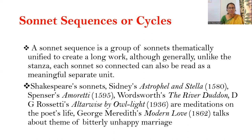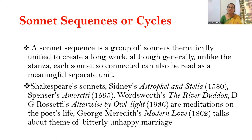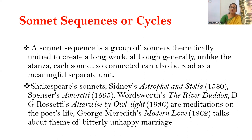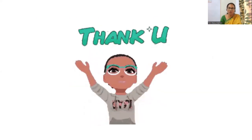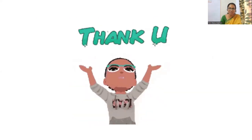A sonnet sequence or sonnet cycle is a group of many 14-line sonnets combined together. The uniqueness of the sonnet sequence is that when read together as a whole, it makes sense as a long unified work, but if we remove one individual sonnet from it, it will also make meaning on its own. That is generally about sonnet. Thank you all for listening and for your patience.